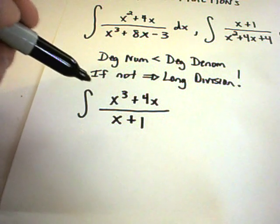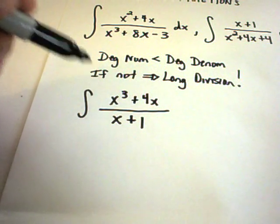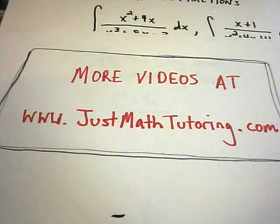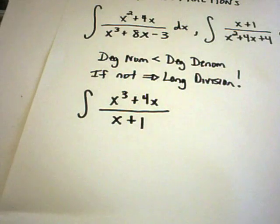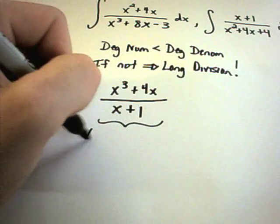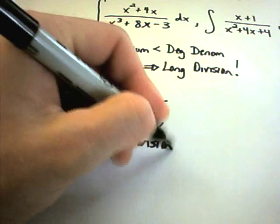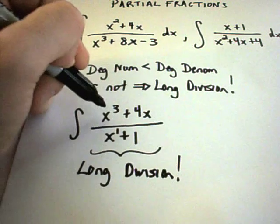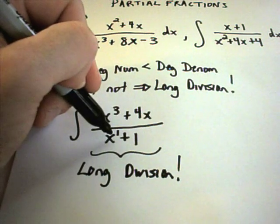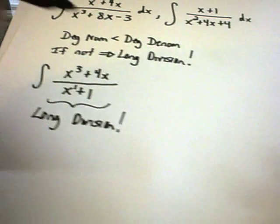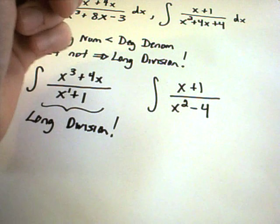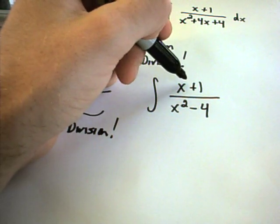If you need to review long division of polynomials, there are examples under the algebra section at my website. By the time people reach partial fractions they've often forgotten it. In this example the highest power on top is three and on the bottom is one, so the degree of the numerator is bigger — if it's greater than or equal to the denominator's degree, you have to do long division.